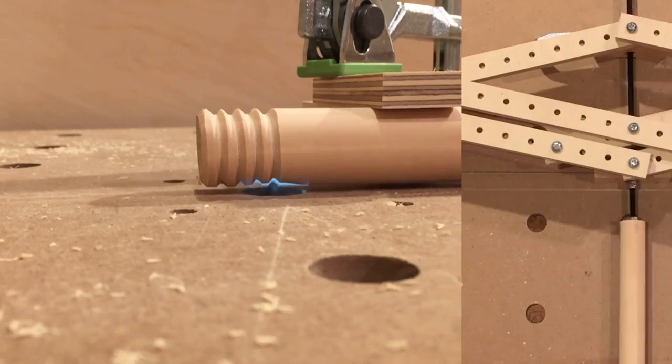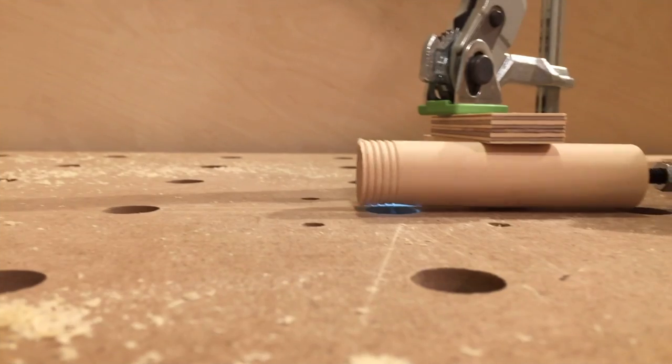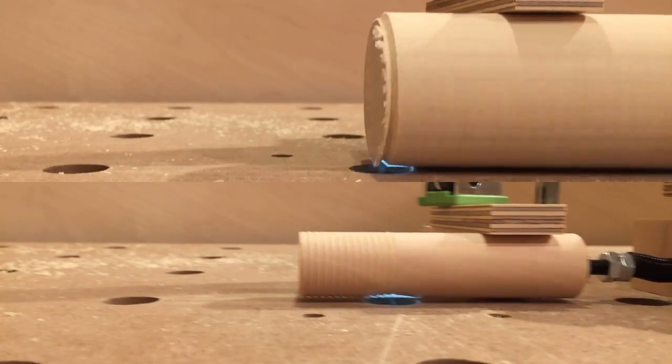Wooden threads on the router table. This is the ultimate thread cutting jig. Cut fine threads, cut coarse threads, virtually any size.